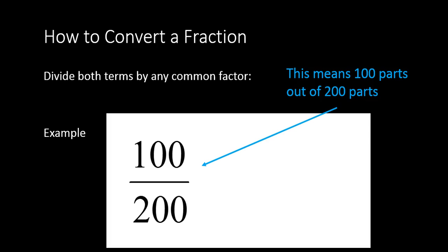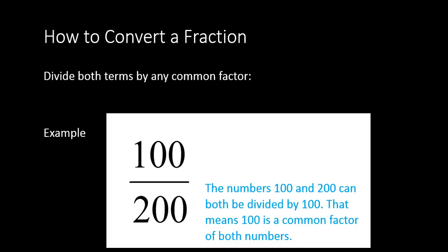So, this fraction of one-hundred out of two-hundred means it's one-hundred parts out of two-hundred parts. Both the numbers, one-hundred and two-hundred, can be divided by one-hundred.